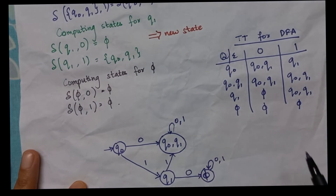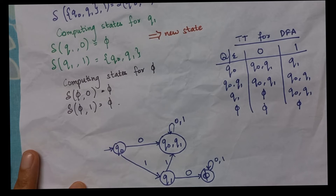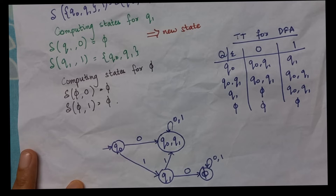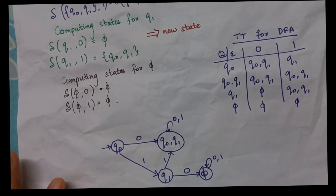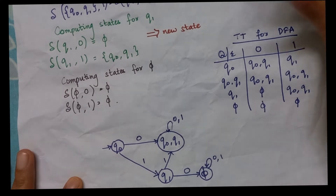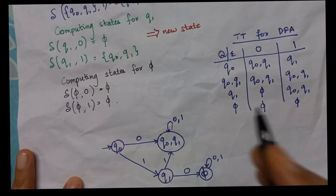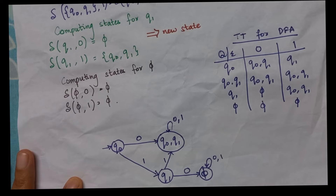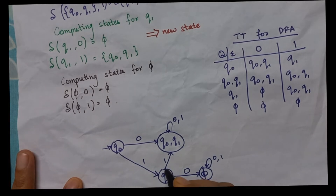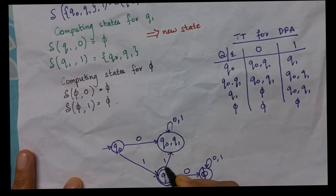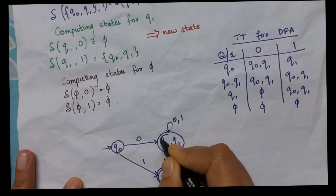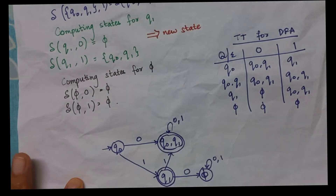So now this NFA is converted to a DFA. Now how do I mark the final state? Q1 is the final state in the original NFA, so wherever Q1 appears in the DFA states, those become my final states.